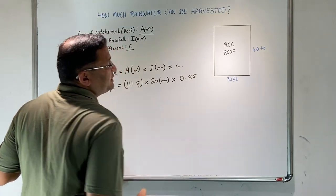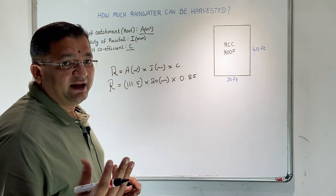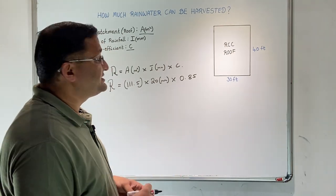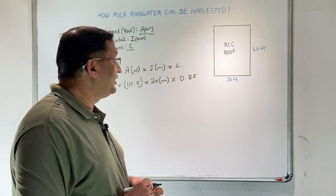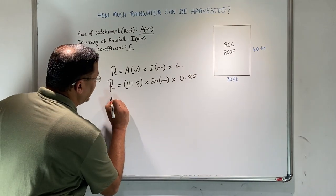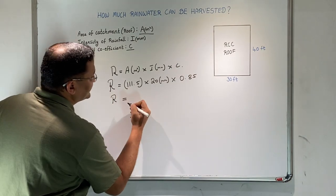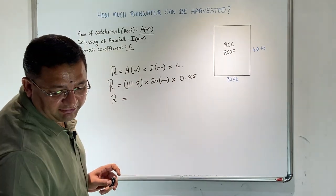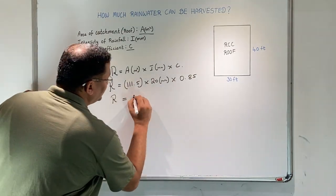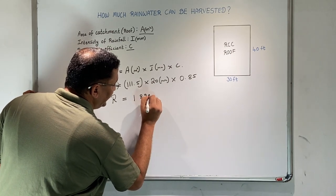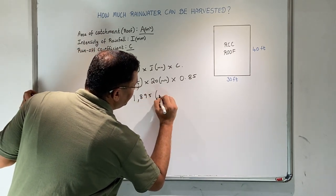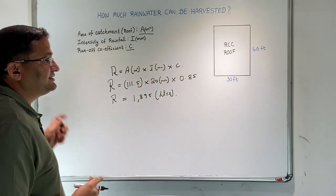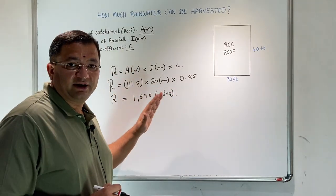That is, 15 percent of the water goes as loss in evapotranspiration, spillage, leakage in the water tanks. The runoff for 20 mm: if we do this calculation, 111 times 20 times 0.85 gives us 1,895 liters.